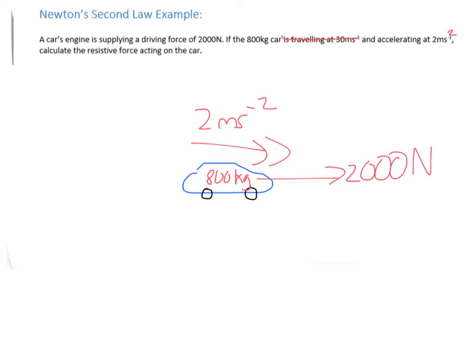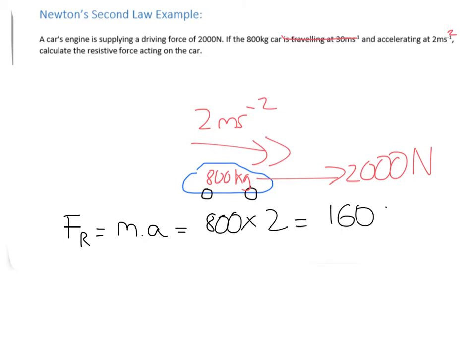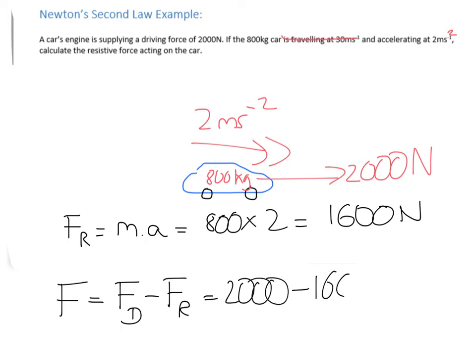Using Newton's second law, the resultant force is MA: 800 times 2 gives 1,600 newtons. To find the friction force F, it is the driving force Fd minus the resultant force — so 2,000 minus 1,600, which is 400 newtons. That's a fairly simple example of how you apply Newton's second law to calculate something useful in a particular scenario.